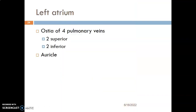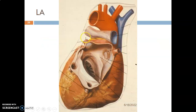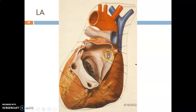The left atrium has openings for four pulmonary veins — two superior and two inferior. Like the right atrium, it has an appendage called the auricle. Between the left atrium and the right atrium is the septum. From the left side, you can appreciate the fossa ovalis and its limbus, which is the margin. The fossa ovalis is a remnant of the foramen ovale that in the fetus ensured blood flowed from the right atrium to the left atrium. In adults, the foramen ovale closes to form the fossa ovalis.